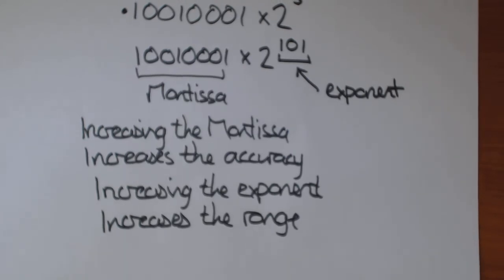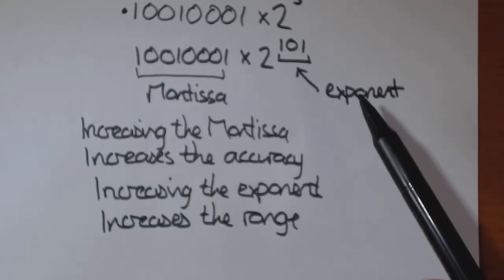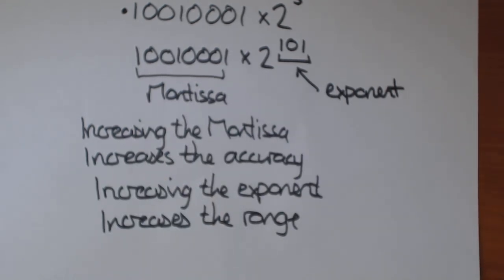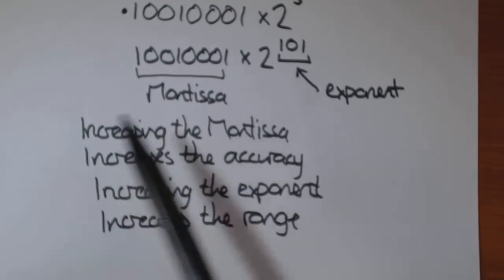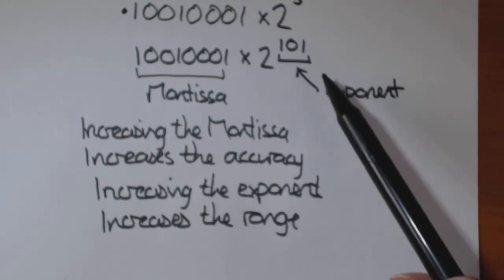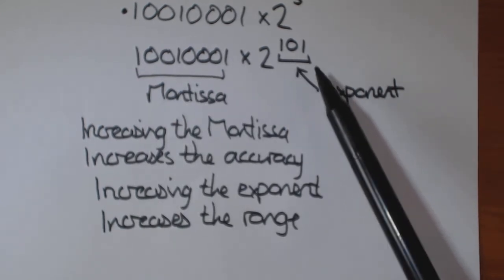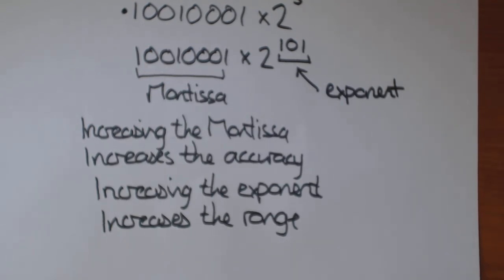So a typical question might be they allocate a certain number of bytes for the mantissa and a certain number of bytes for the exponent. And if they decrease the number of bytes for the mantissa, what does that mean? Well, that decreases accuracy of the number. If they increase the number of bytes used to save the exponent, what does that mean? Well, that increases the range.